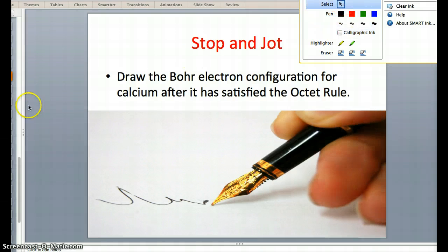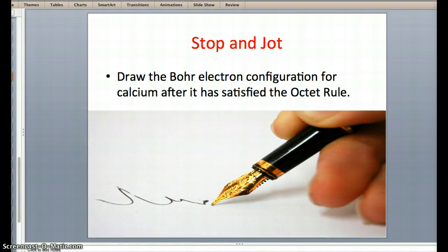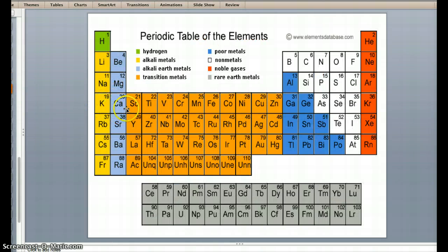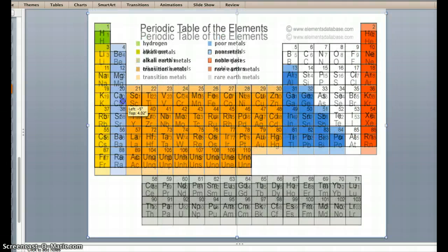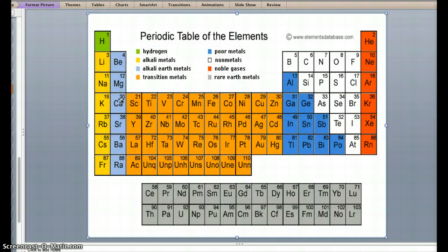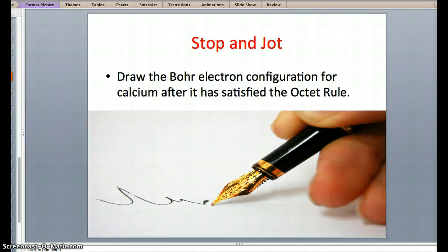Given this, we're going to look again at the periodic table to find calcium. There it is, I've found it, beautiful. And I know it has an atomic number of 20, indicating that there are 20 protons and 20 electrons, making my job a lot easier.